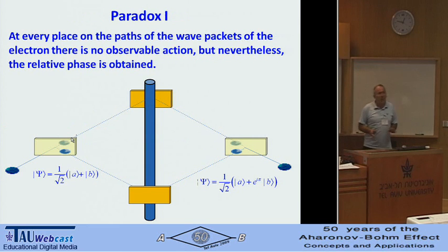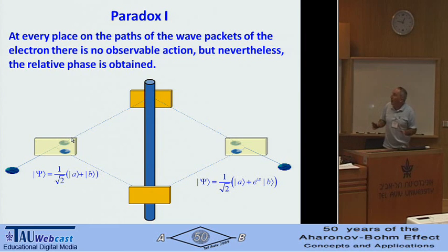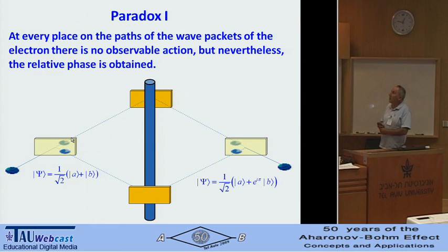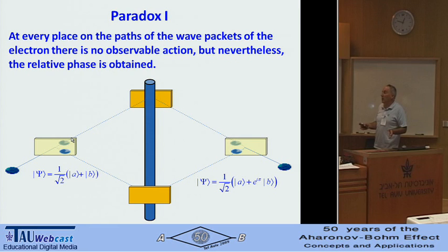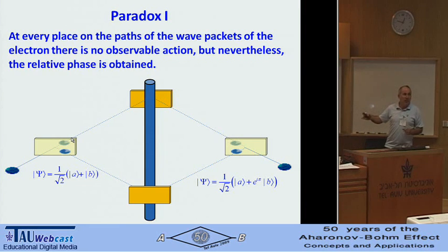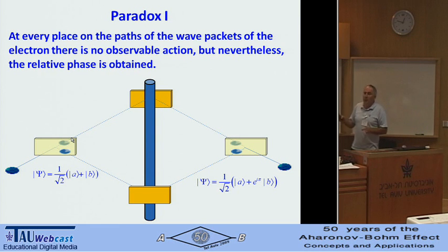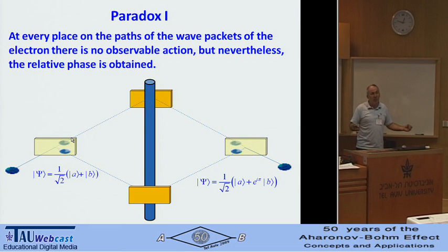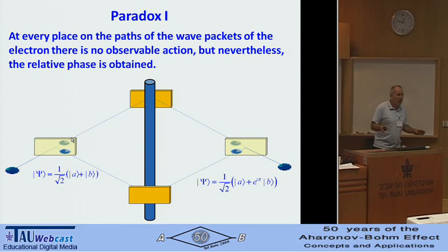I call this Paradox One. In classical language, it's truly paradoxical: at every place on the path of the wave packet of the electron, there is no observable action, yet the relative phase is obtained. We can choose a gauge and show that nothing happened at every place we want to consider. This paradox, I believe, will stay — and this is what makes the Aharonov-Bohm effect interesting. But I want to talk about some other paradoxes.